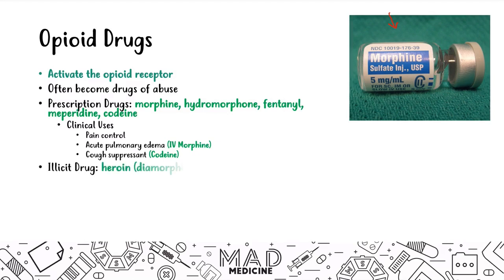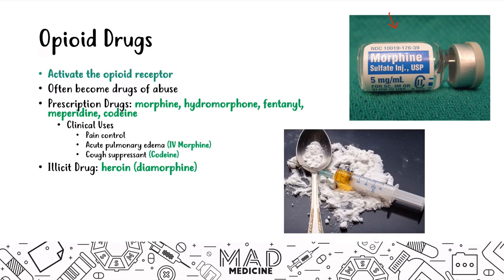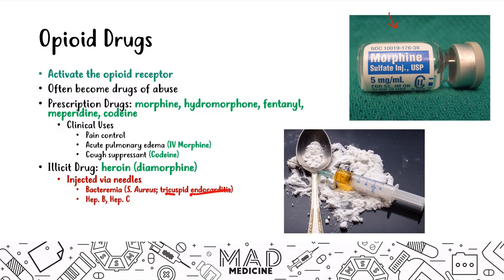When it comes to illicit drugs, the main drug you need to know is heroin, also known as diamorphine, which is injected via needles. Because of needle injection, users are at higher risk of developing infections. IV drug users can develop bacteremia due to Staph aureus, leading to tricuspid endocarditis. They can also have viral infections including hepatitis B, hepatitis C, and HIV.